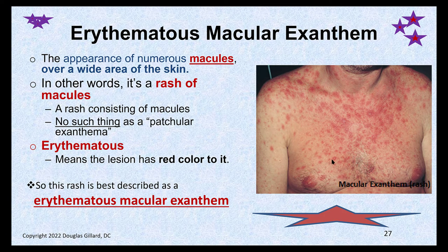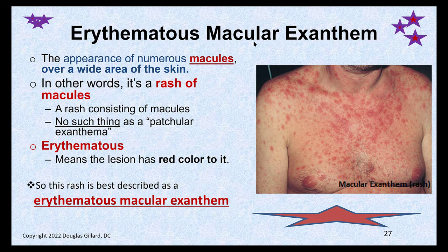So this patient has macules — they're all flat. So this is a rash of macules: a macular exanthem. We could describe it further — these are red macules, so we could say it's an erythematous macular exanthem. What if they're itchy? If they're super itchy, then we could say pruritic erythematous macular exanthem. See how that works?